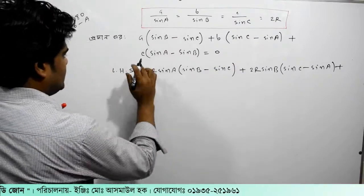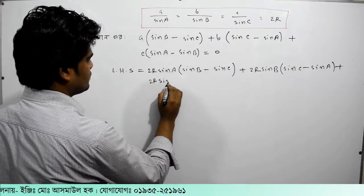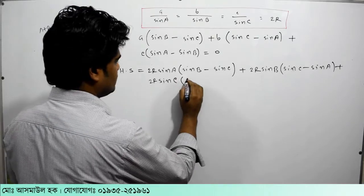And here C equal to 2R sin C, sin A minus sin B.